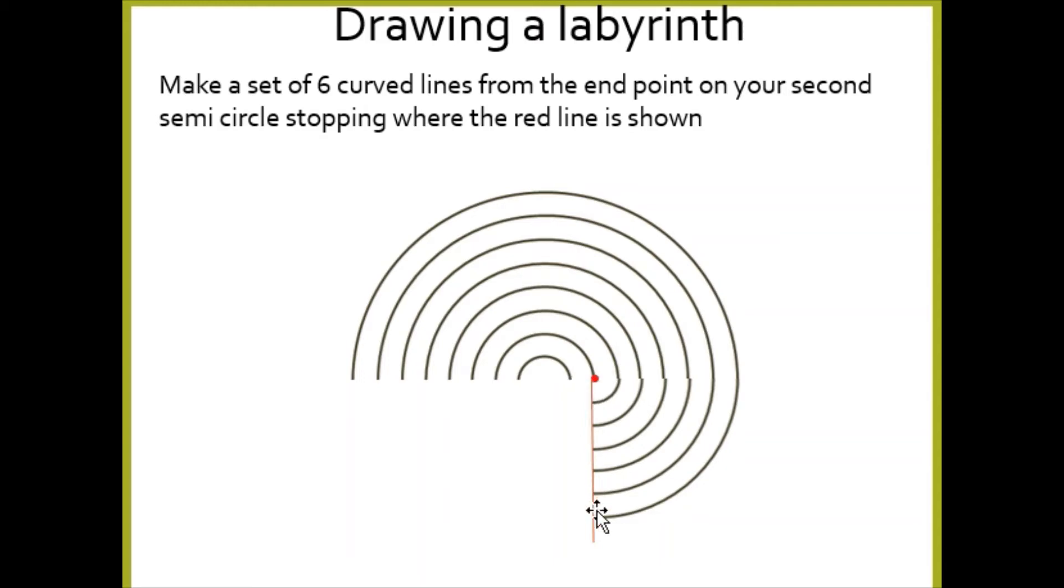So that straight line that comes from your red dot there, you're going to draw your semicircles from each of these lines all the way to your red line here. Then you're going to rub that red line out.